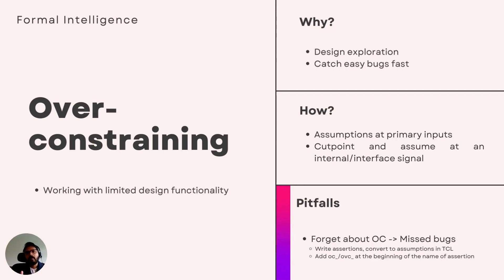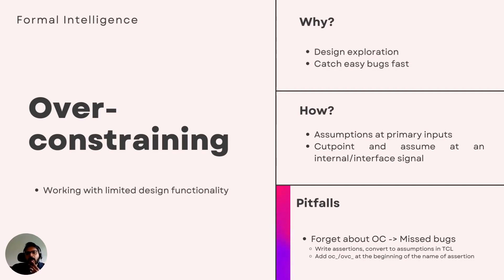A simple example for the first case: if you're doing formal verification for a CPU and you have external interrupt signals coming from blocks outside, you can disable them. For case two, if you want to focus on certain functionalities of an arithmetic logic unit (ALU) and not others, you can say that your opcode can only take 'add' and 'subtract' values — for example, 000 and 001 — and not other values like multiply or shift. These are the two broad options.